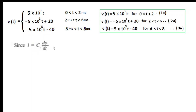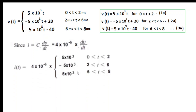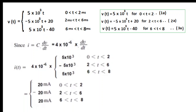Now we need to find the current. We know the formula: i_C = C · dV/dt. C is 4 microfarads, so 4×10⁻⁶ · dV/dt. For each of the three voltage expressions, we differentiate with respect to t. The derivative of 5×10³·t is 5×10³; for -5×10³·t + 20 it is -5×10³; and for 5×10³·t - 40 it is 5×10³. The constants differentiate to zero.